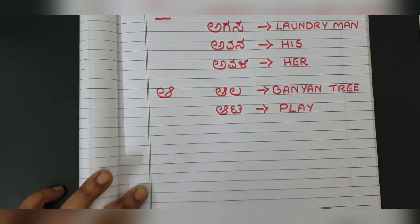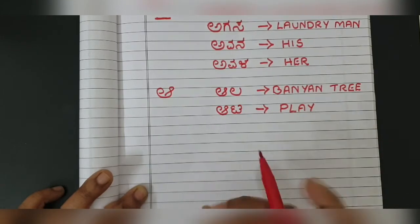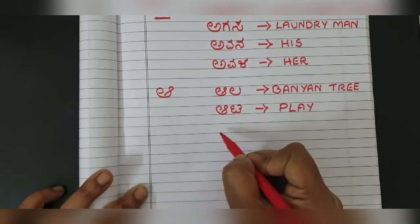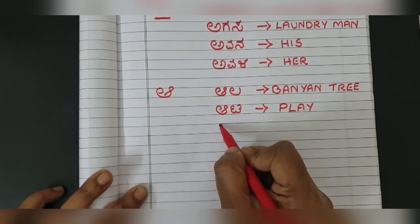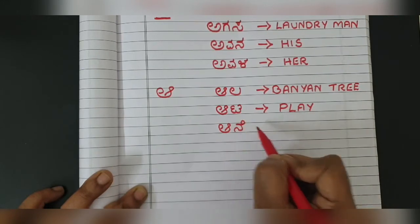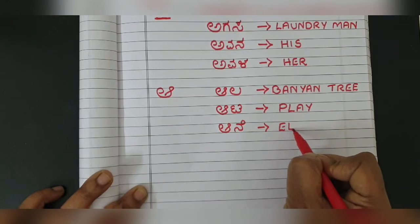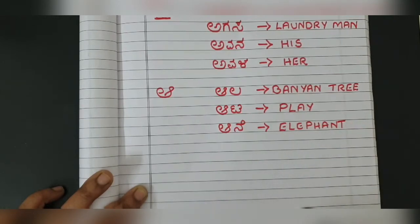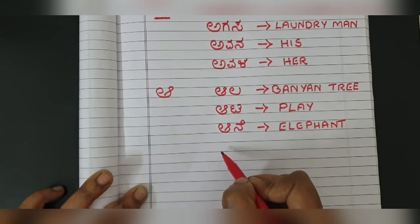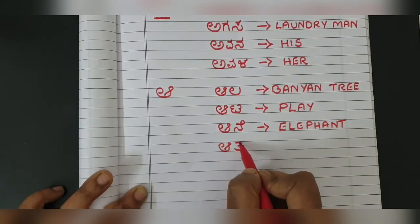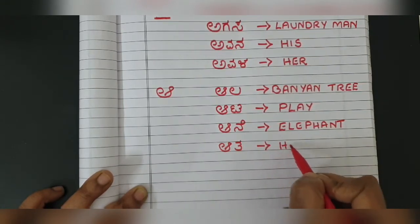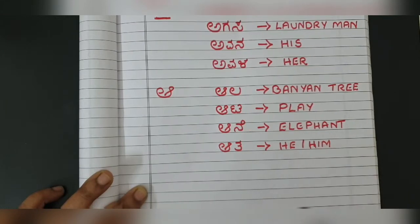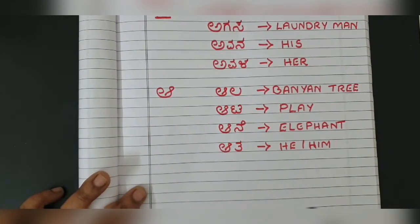I'm writing with a sketch pen because the writing comes out more clear. The next word from Ā is 'āne' — Ā-N-E. Āne means elephant. You also get another word: 'āta,' which means he or him. So we have four words from Ā as well.